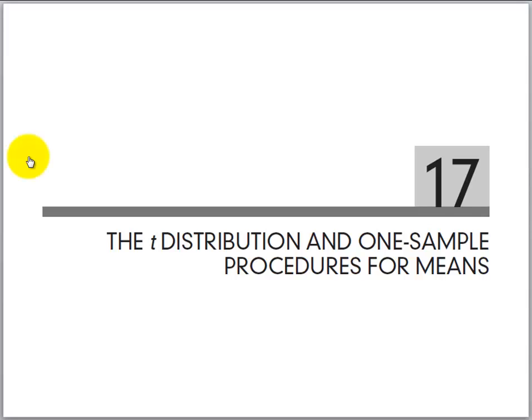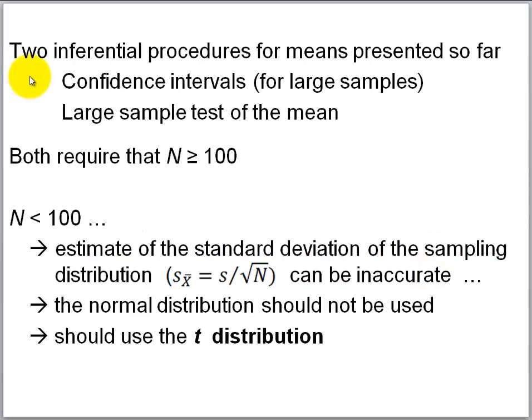On to chapter 17, the first chapter in about half a dozen, all of which will speak to different significance tests for different situations. Chapter 17 introduces you to a new distribution, the T distribution, and presents procedures that use the T distribution in regards to means. To this point, we've covered two inferential procedures for means: confidence intervals and also the large sample test of the mean.